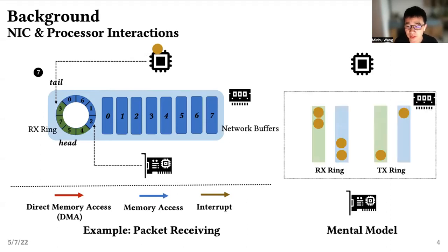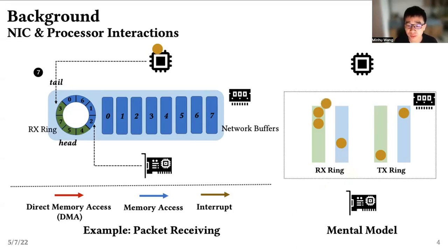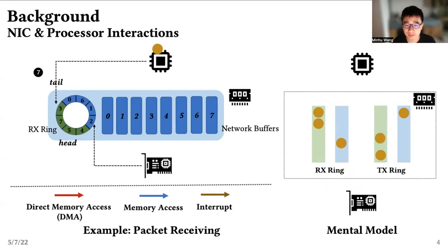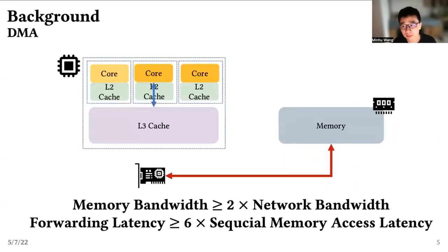This model is very robust. We could understand these interactions with another mental model, as shown on the right. We could consider both the receiving ring and the transmitting ring as two queues separated by the ring head and tail. Buffers are moved between these four FIFO queues in order by NIC and processors. If packet forwarding conflicts in memory, it generates memory traffic that doubles network traffic, and forwarding a packet requires six sequential memory accesses.